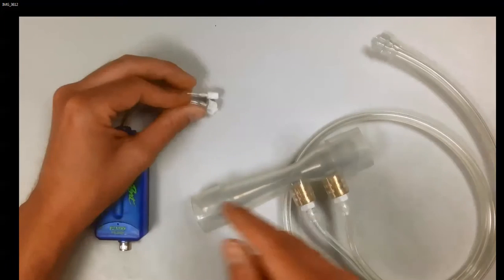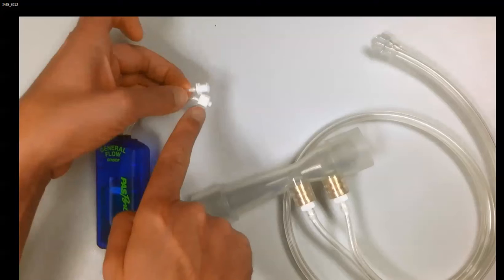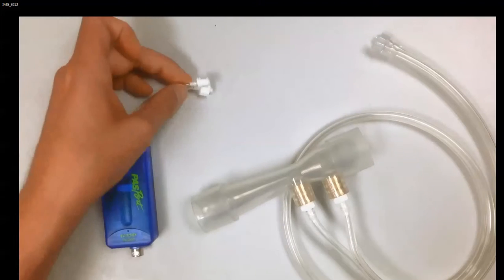At the top of the general flow sensor, we have two different pressure ports that help you determine the pressure differential across those two ports.